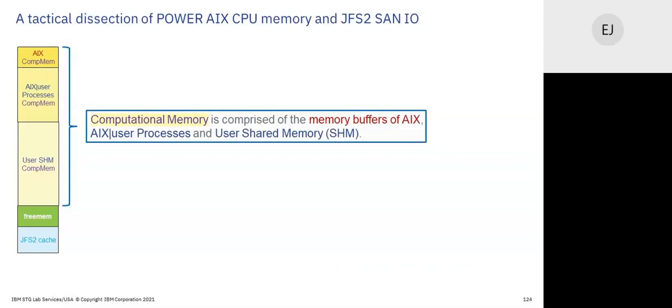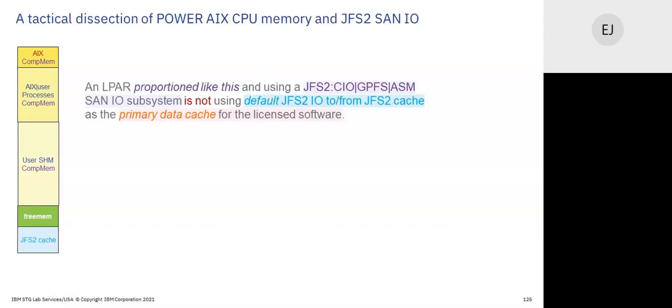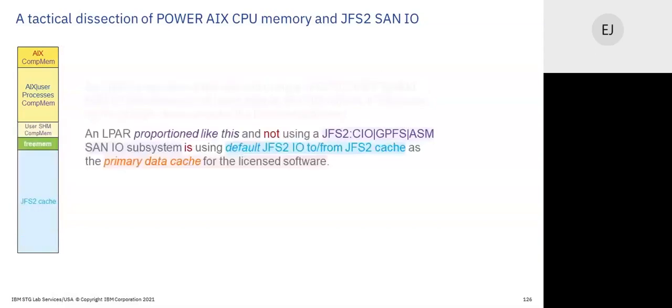Computational memory is divided: priority buffers of AIX (some are pinned), user processes, AIX processes, and a big shared memory segment — shared memory holds data in computational memory. If you're using direct I/O methods — CIO, GPFS, ASM — you're not using the file cache as the primary data cache for licensed software. Traditionally there was no direct I/O, no CIO, GPFS, or ASM — so we used the JFS2 file cache as the primary data cache. Today we're hopefully more in the direct I/O model.